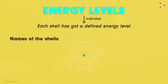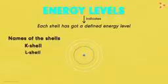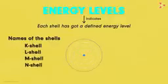And how do we name these shells to indicate their position? It's simple. Beginning from the one near the nucleus, we name them as the K shell, L shell, M shell, N shell and so on.